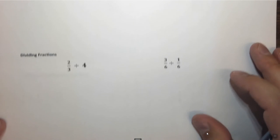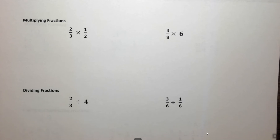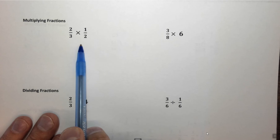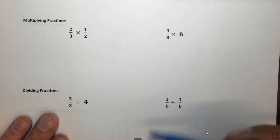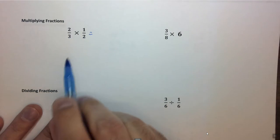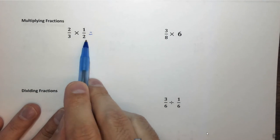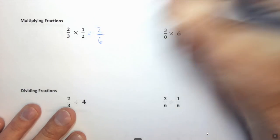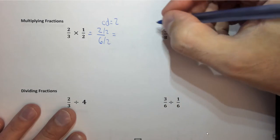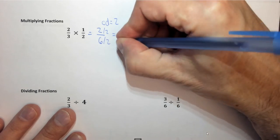The next thing I want to look at is multiplying fractions and dividing fractions. We already actually did some of this in the previous case because we had to multiply fractions together to make the denominators match. When we multiply fractions, we multiply the tops and we multiply the bottoms. In this case we have 2 times 1, which is 2, over 3 times 2, which is 6. These have a common denominator of 2. So we divide by 2, and the simplest answer is 1 third.